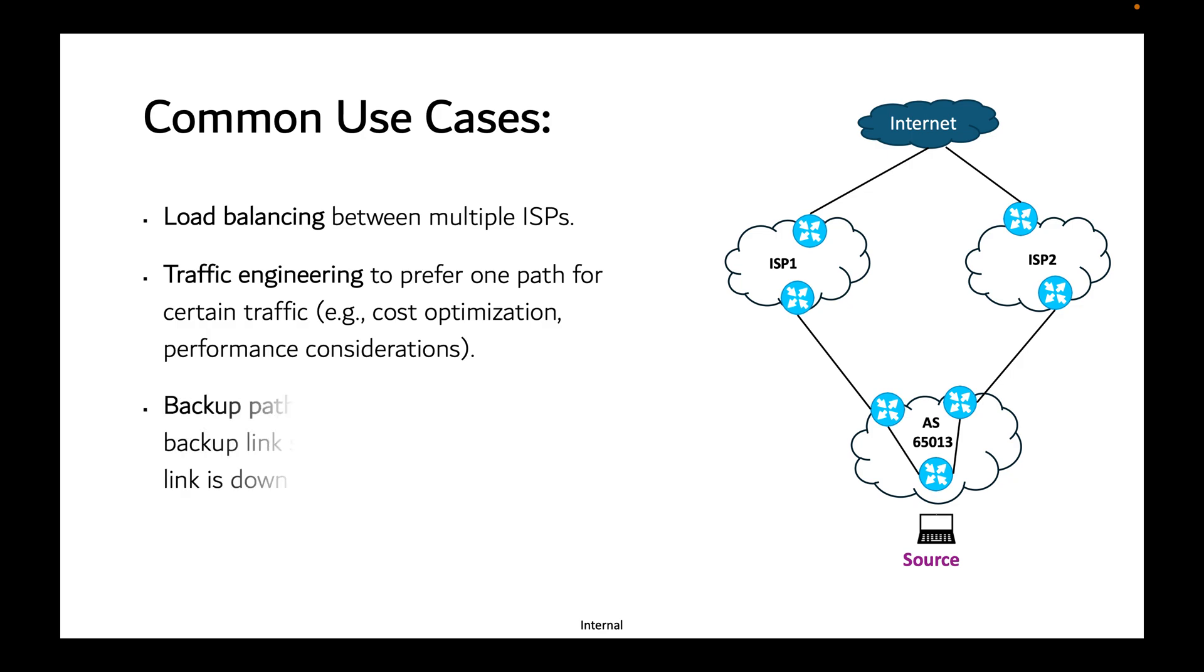It is also used for backup paths—this is one of the important ones. It is used for backup paths by lowering the local preference on the backup link, so it is only used when the primary link is down. This is used in most ISPs and big enterprises.